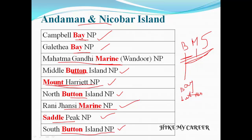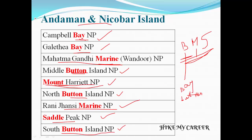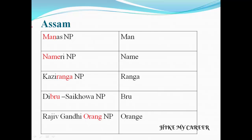Let's recall the national parks: Campbell Bay National Park, Galathea Bay National Park, Mahatma Gandhi Marine National Park, Middle Button Island National Park, Mount Harriet National Park, North Button Island National Park, Rani Jhansi Marine National Park, Saddle Peak National Park, South Button Island National Park. These are the national parks in Andaman and Nicobar Island.